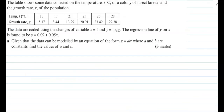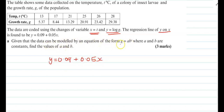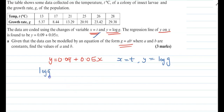Let's quickly do one more question. The table shows data collected on the temperature t of a colony of insect larva and the growth rate g of the population. The data are coded using x = t and y = log g. The regression line y on x is given as y = 0.09 + 0.05x. We need to find the values of a and b in the model g = ab^t.